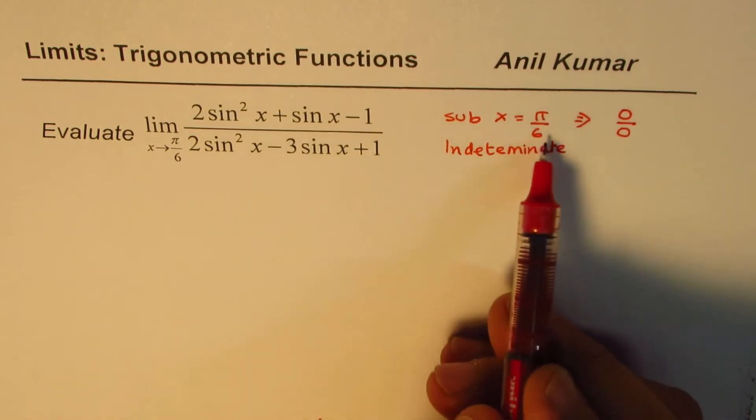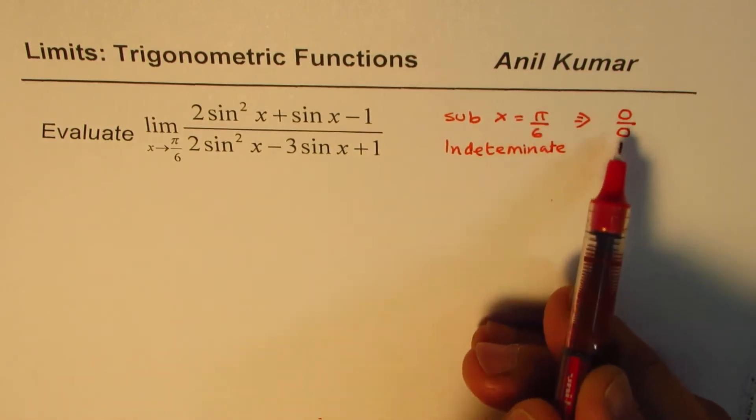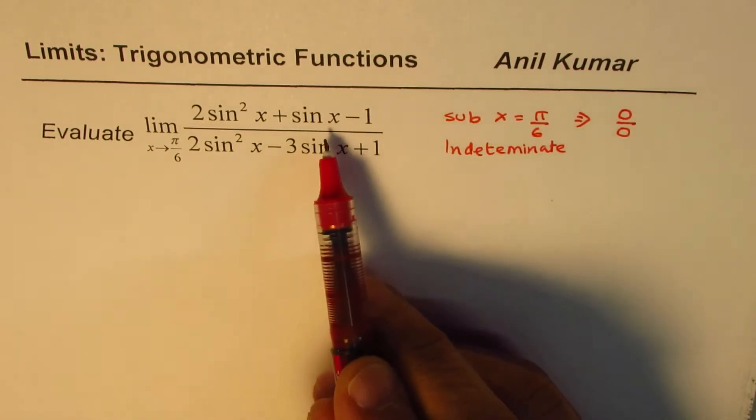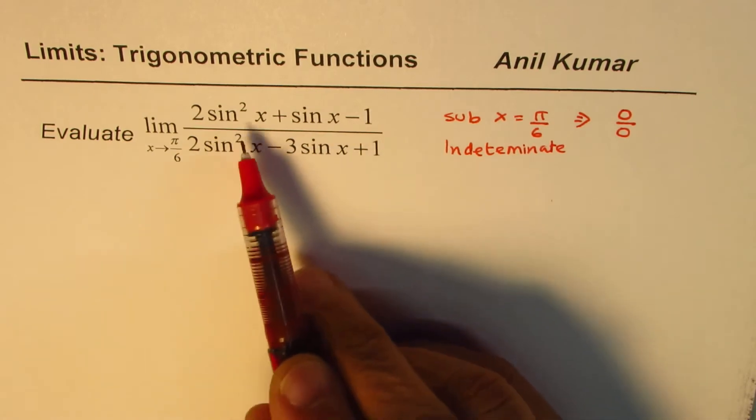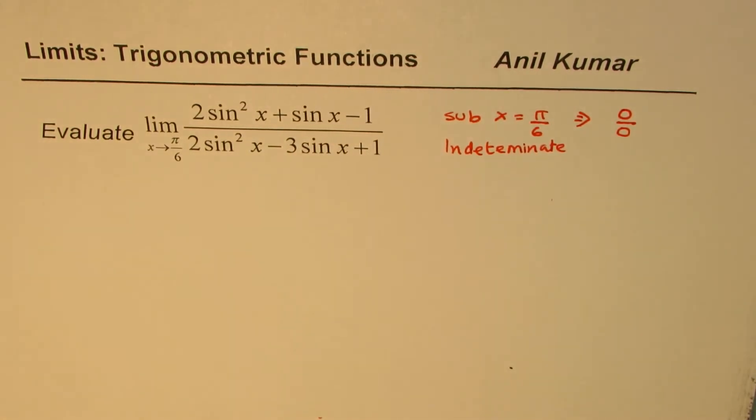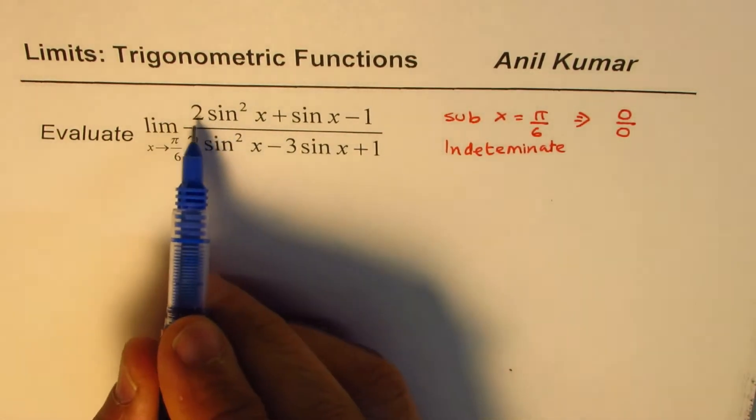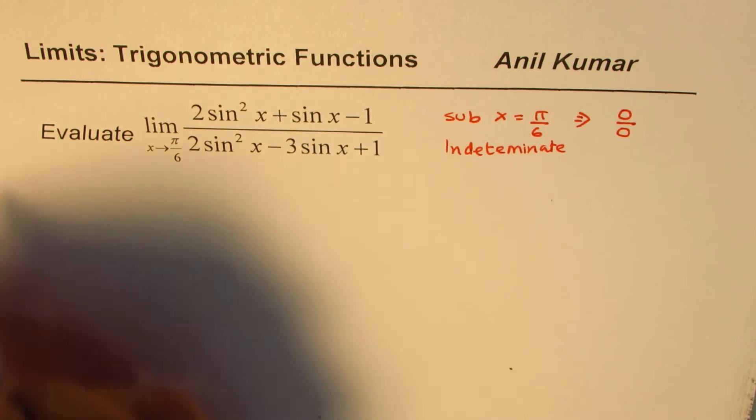But that also indicates that there is a common factor in numerator and denominator. So instead of getting into the calculations and showing you this is 0 over 0, I will actually find the common factor in both numerator and denominator just to prove that it was 0 over 0. So that is an alternate approach. We will apply normal factoring techniques to factor both numerator and denominator.